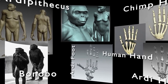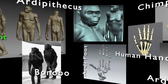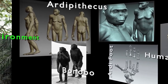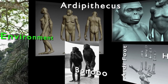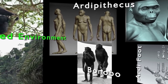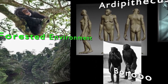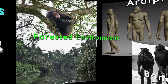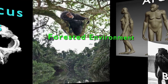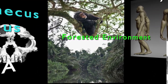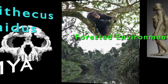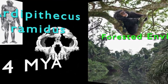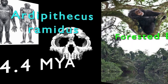From an appearance standpoint, Ardipithecus kadabba was about the same size as a modern chimpanzee. It probably walked upright part of the time, but was still an agile climber. It most likely lived in a forested environment with lakes or rivers nearby and swamp-like conditions present.